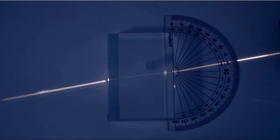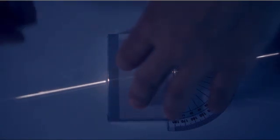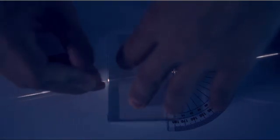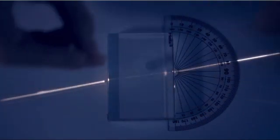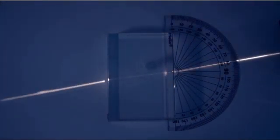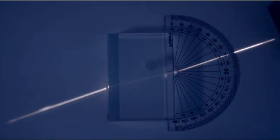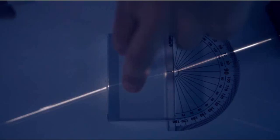The ray box is positioned so the angle of incidence is 10 degrees. Optical pins are used to mark the path of the ray of light. The angle of incidence is increased by intervals of 10 degrees, and the path of the ray of light is marked each time.